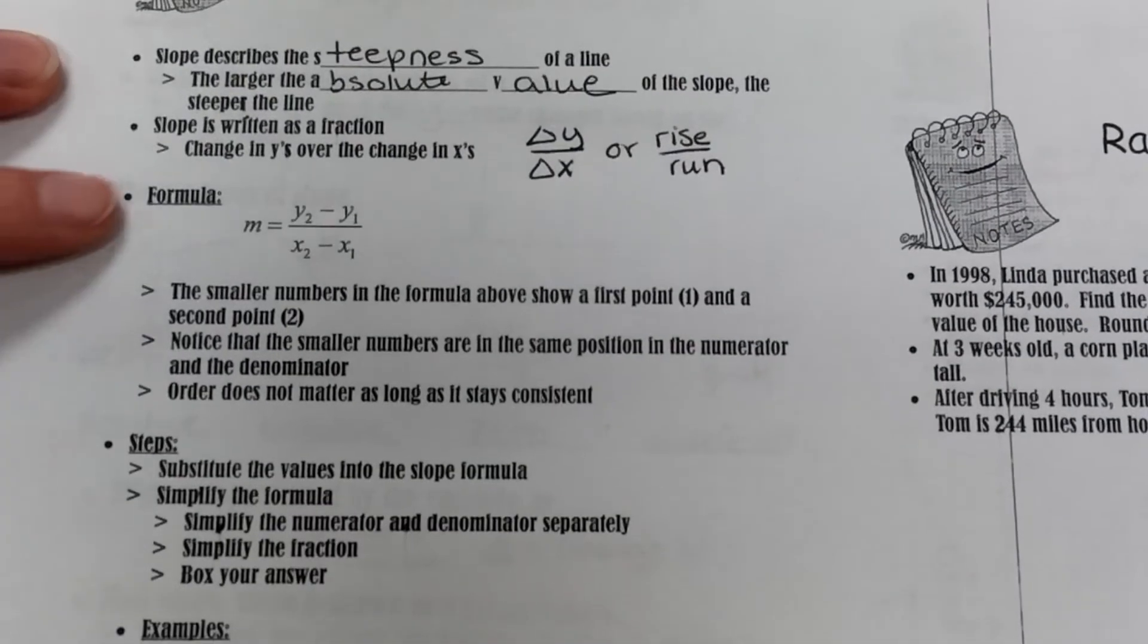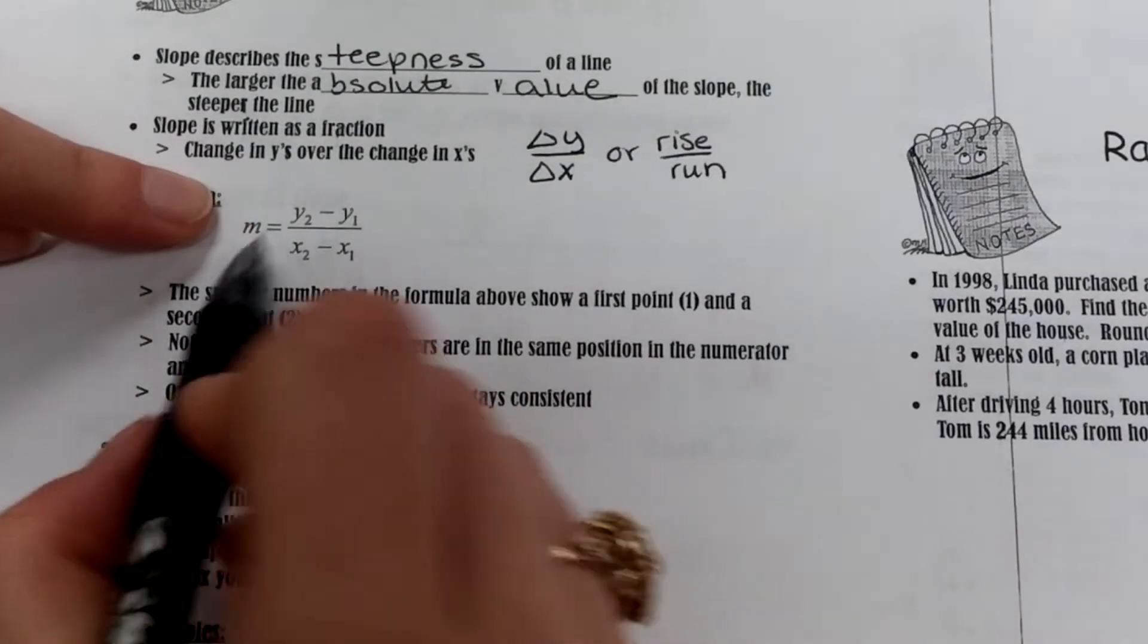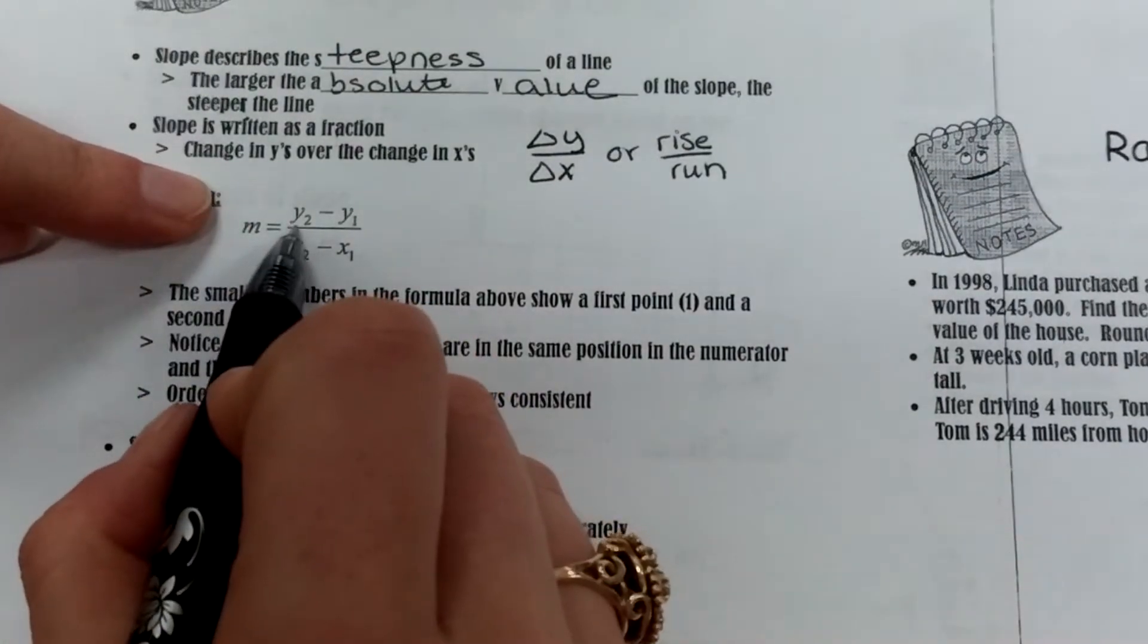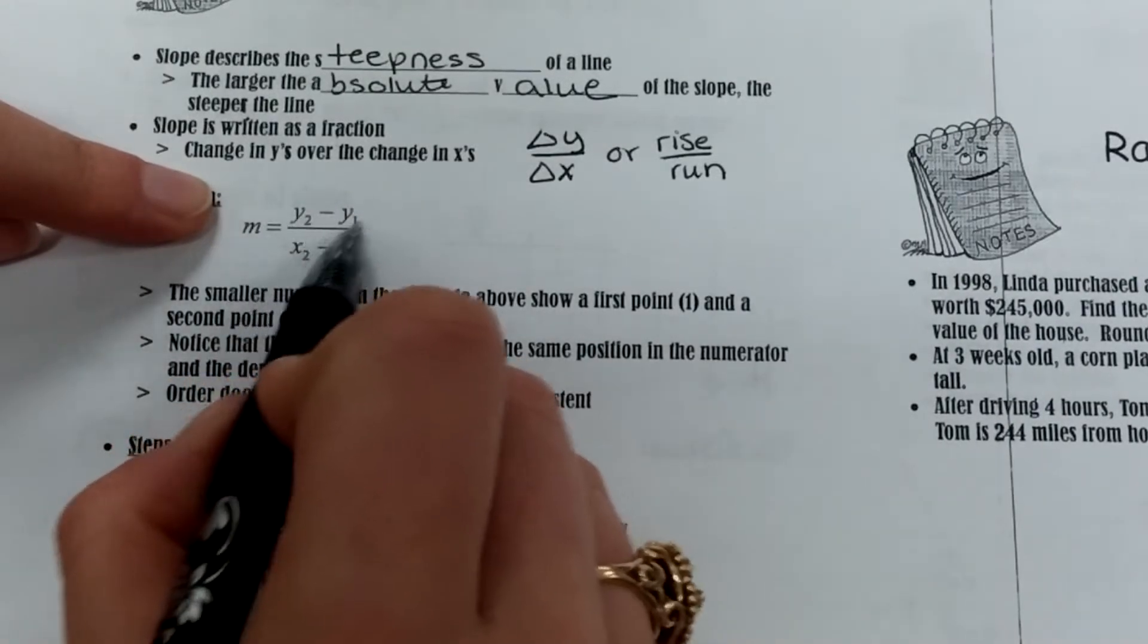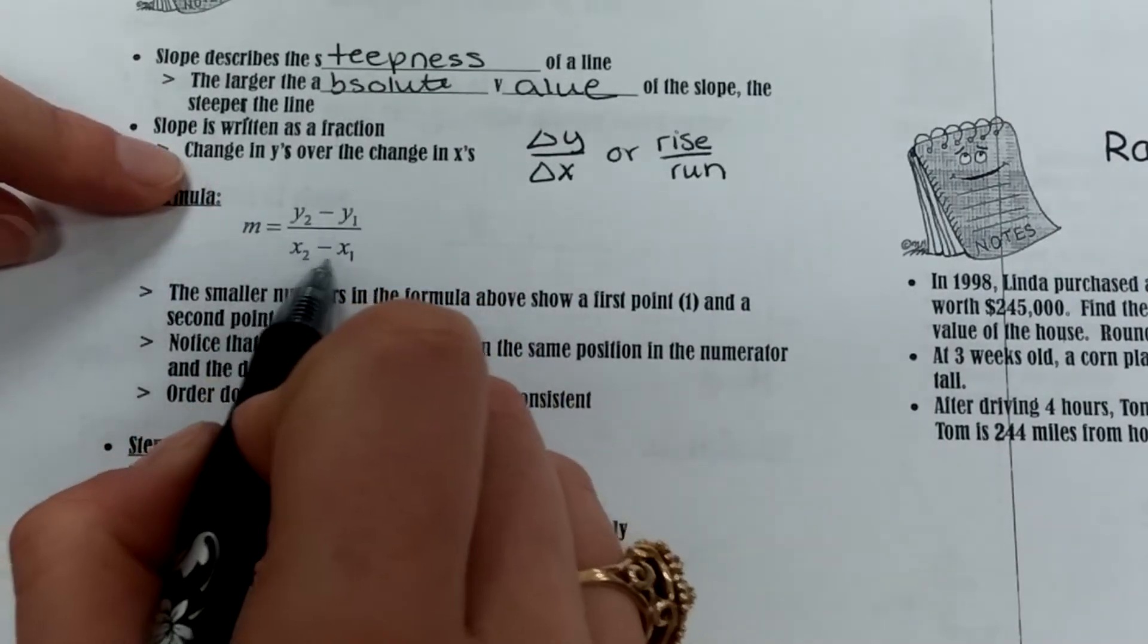Now we're going to get a formula that we can use when we have points. So slope m equals y2 minus y1, so that gives you the change in y's, over x2 minus x1.